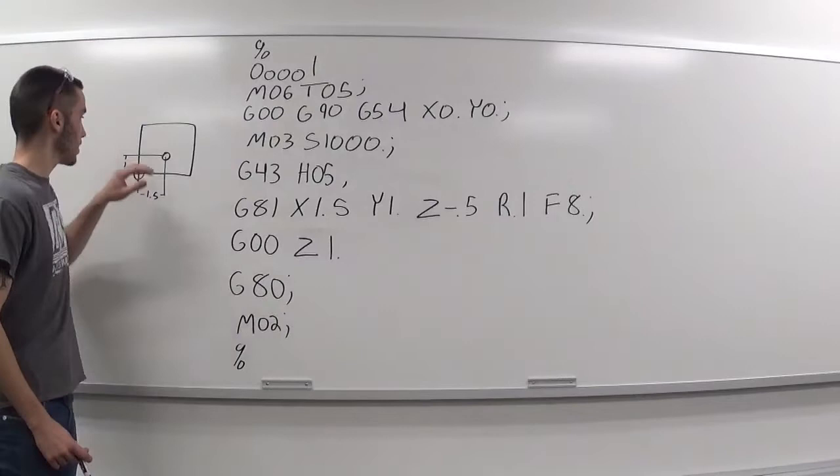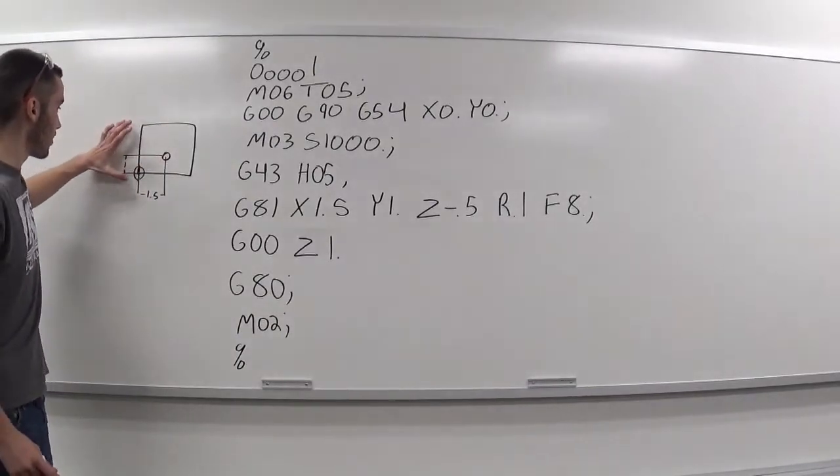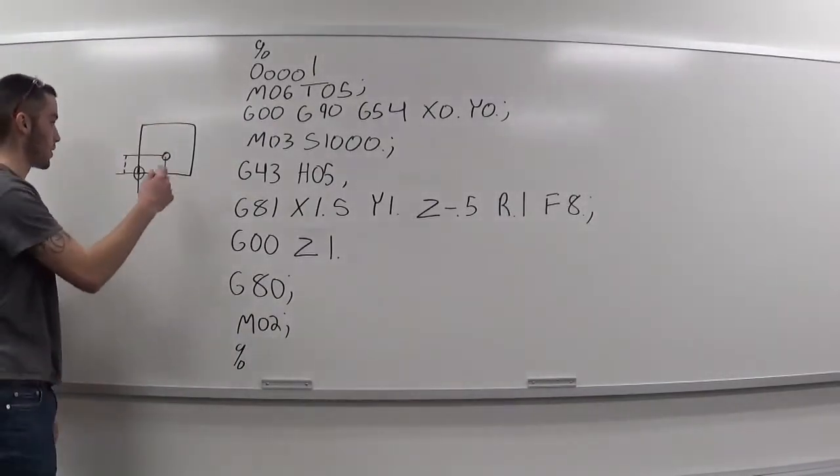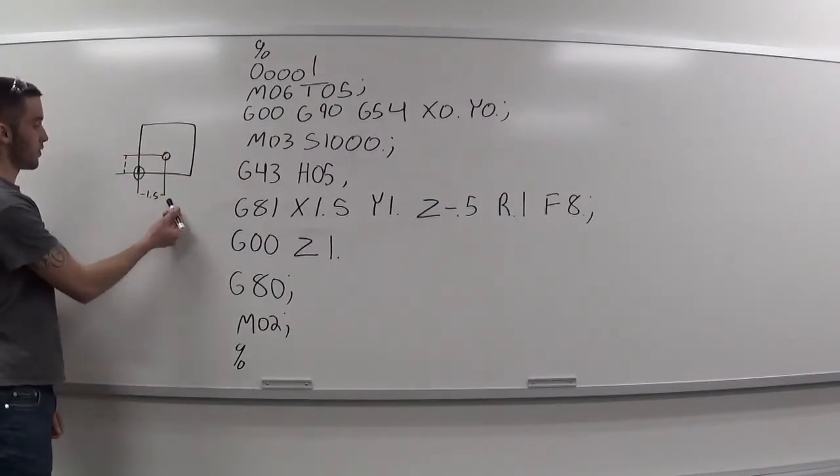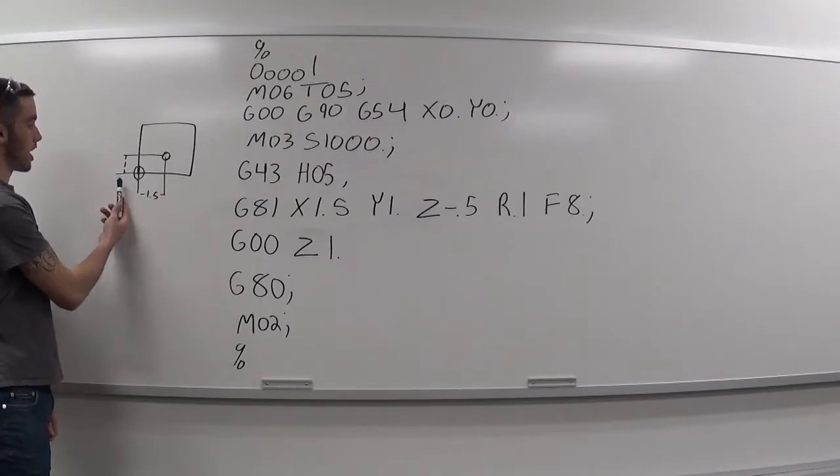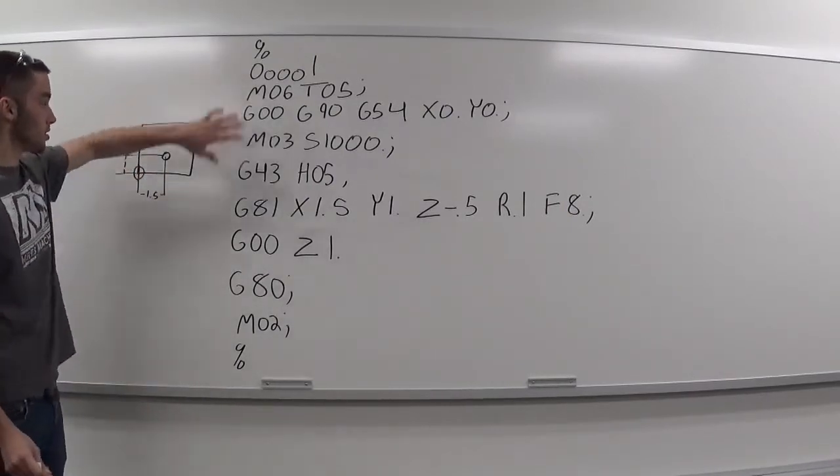Alright, so we have this simple blueprint right here. It's just like a square, and we're going to be drilling a hole into it. The hole in the X is 1.5 inches over, and Y is 1 inch up. And our zero is right here in the bottom left corner. Here's the program for it.